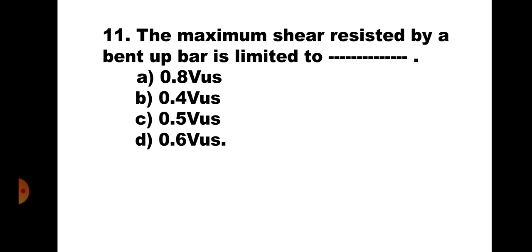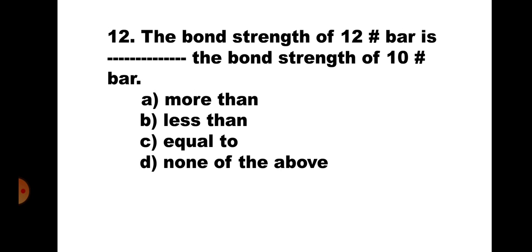Question 11. The maximum shear resisted by a bent-up bar is limited to: A. 0.8 VUS, B. 0.4 VUS, C. 0.5 VUS, and D. 0.6 VUS. As per IS-456, the shear resisted by a bent-up bar is limited to 50% of VUS, that is 0.5 VUS. Hence, the correct answer is C. 0.5 VUS.